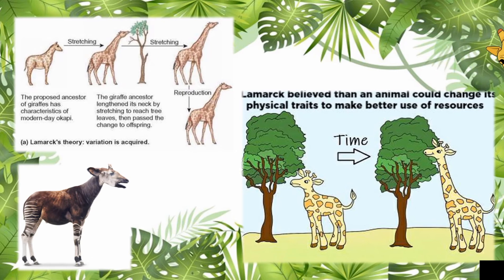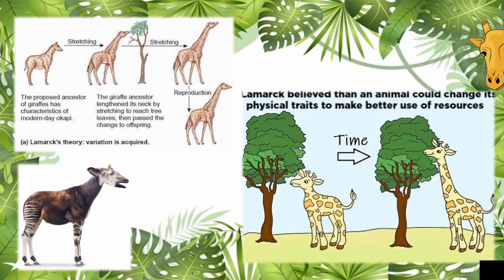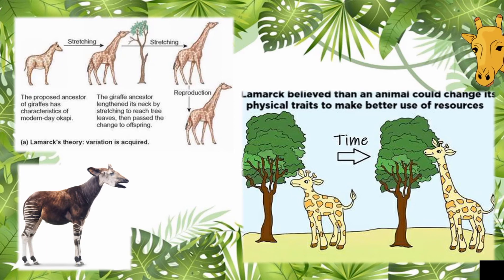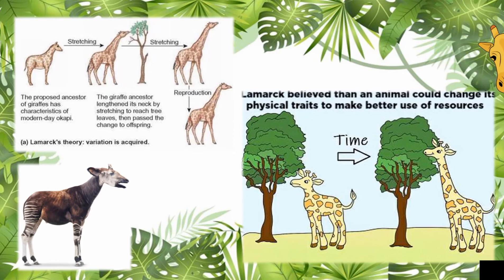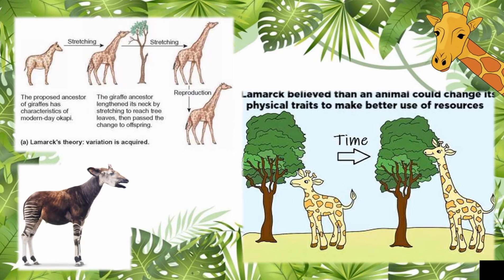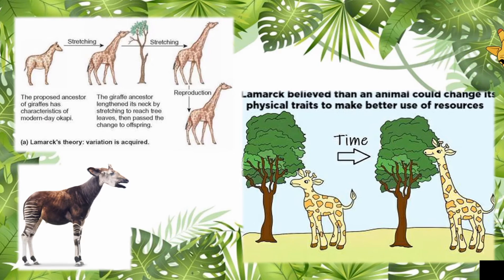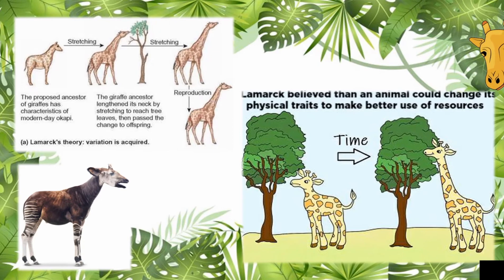For example, Lamarck believed that the giraffe had a long neck because its neck grew longer during its lifetime. It stretched to reach leaves on tall trees, meaning that each generation of giraffe had a longer neck than the previous generation.